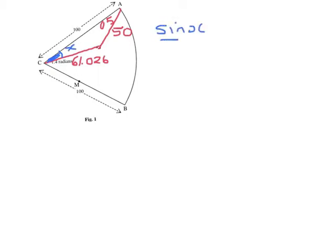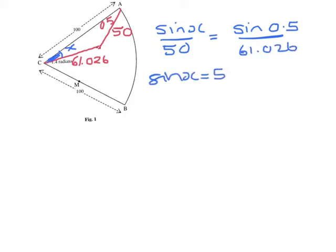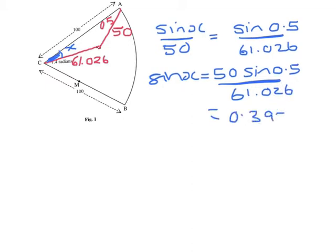The sine of X over 50 has to equal the sine of 0.5 over 61.026. So sine of X has to equal 50 sine 0.5 over 61.026, which gives us 0.3928, and a value of X,